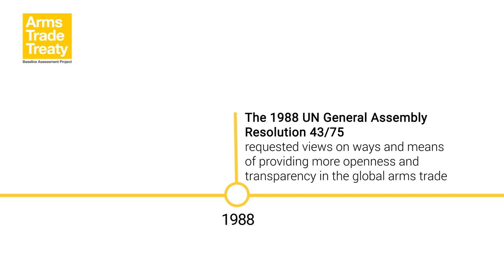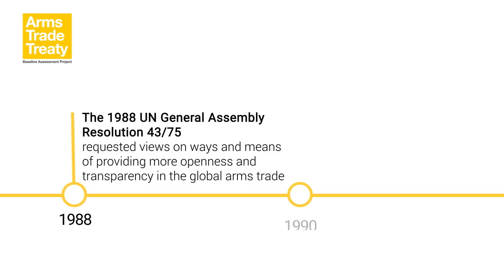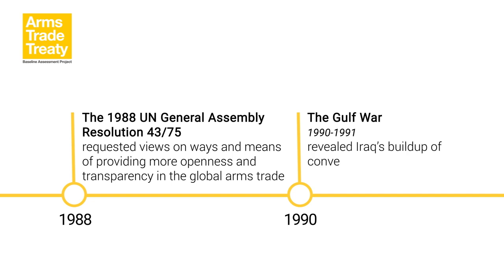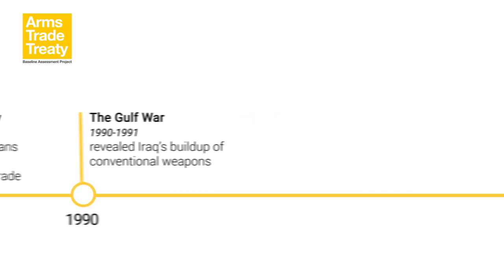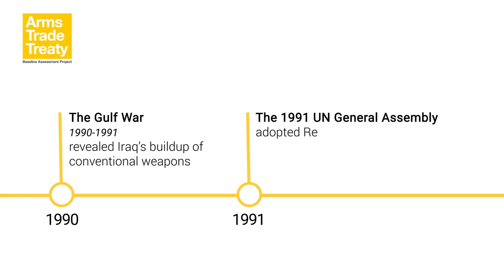The willingness to reconsider transparency in arms transfers was renewed in the aftermath of the Gulf War, when governments around the world discovered the large number of weapons provided to Saddam Hussein in the lead-up to his invasion of Kuwait. Suddenly, there was a renewed push towards greater transparency in the arms trade, as governments sought to prevent future secret arms build-ups and build greater confidence between states. In 1991, the General Assembly adopted Resolution 46/36L on transparency in armaments, which requested that the Secretary-General establish and maintain a Register of Conventional Arms to house data on international arms transfers, as well as military holdings and procurement through national production and relevant policies.